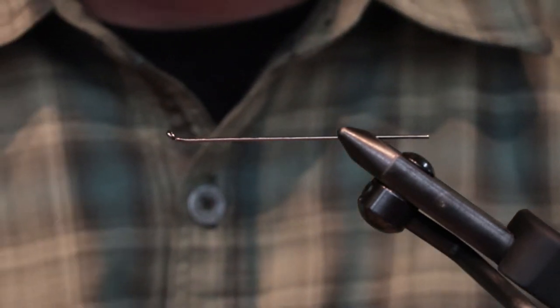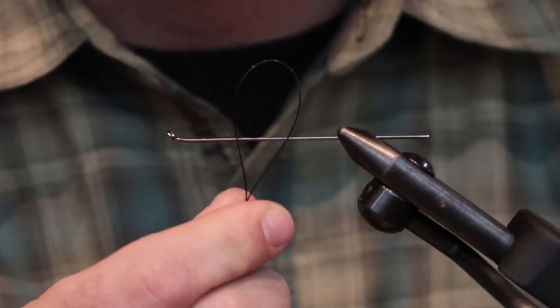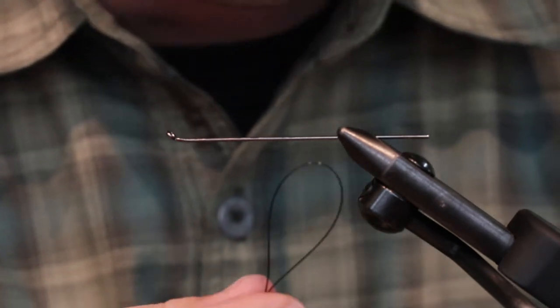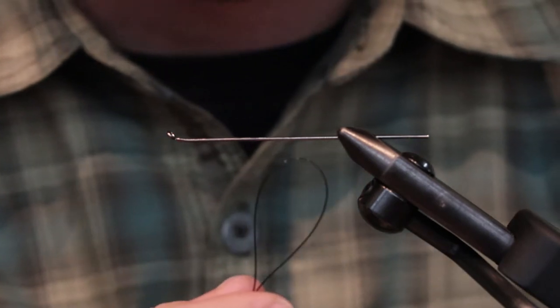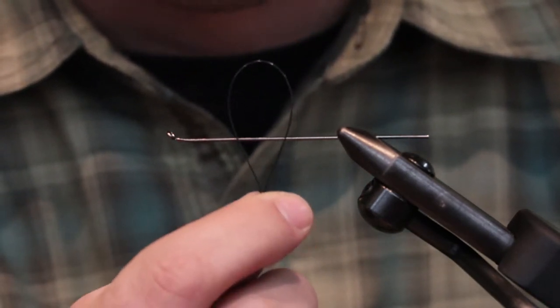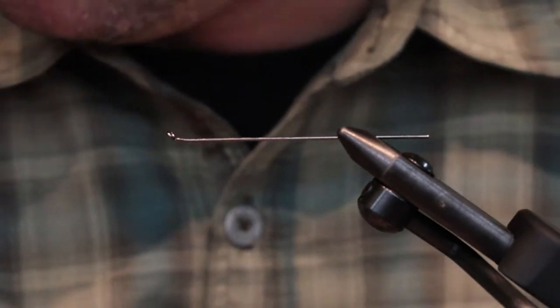The first thing I did is I just cut a piece of intruder wire that was going to be appropriate for the fly size. Everybody has an idea as to how far the fly needs to hang back. I think you basically just barely need to be able to put the hook on.